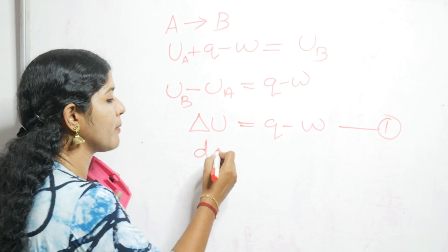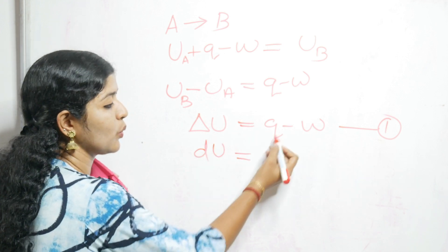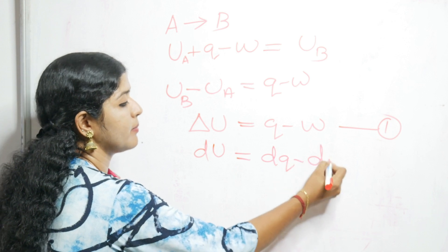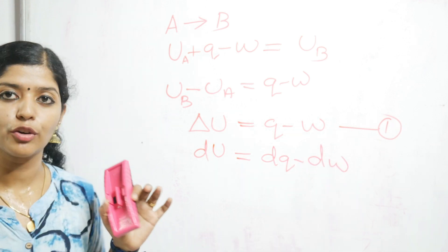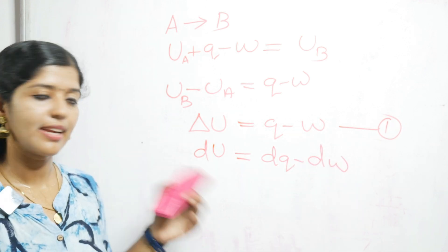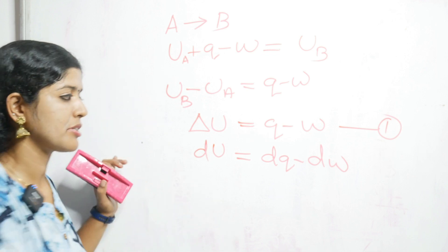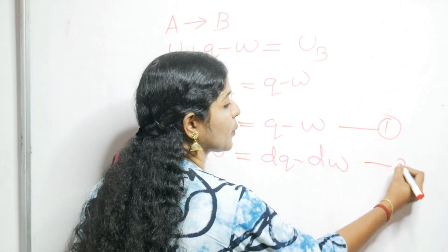Delta U will become dU, Q will become dQ, and W will become dW. So dU equals dQ minus dW. This is the differential form of our equation, and we can number it as equation 2.